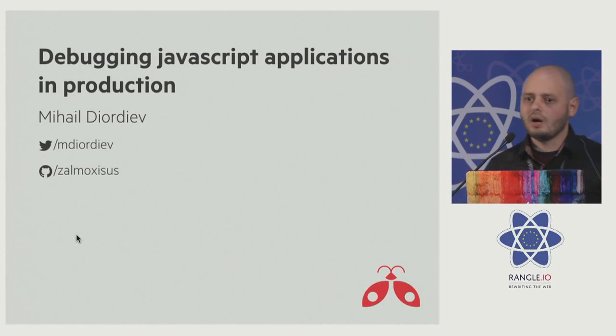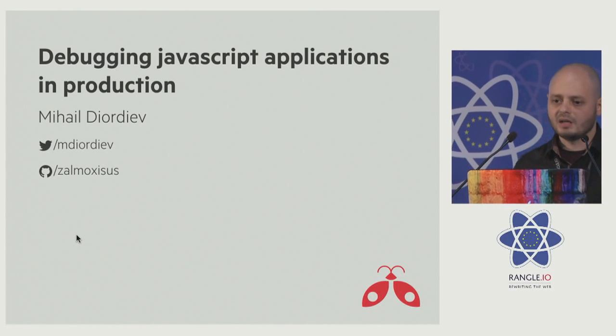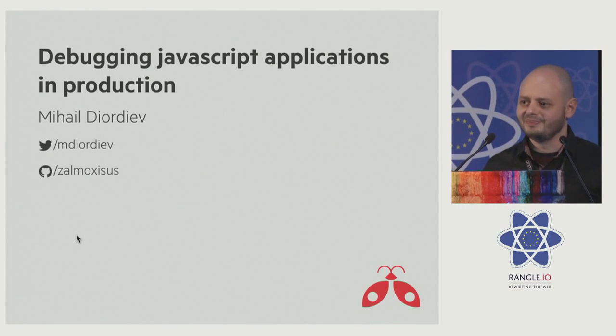Jeff had a great presentation, a great talk about flow, which helps a lot to avoid exceptions, especially those annoying error messages like 'method is not a property of undefined.' But how do you normally debug JavaScript applications in production?